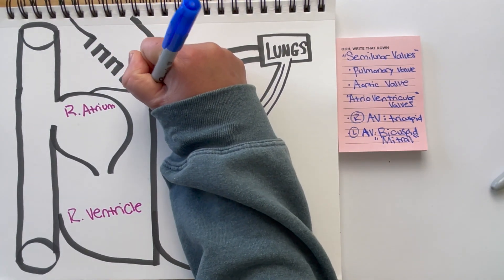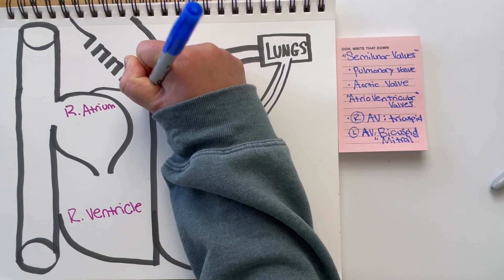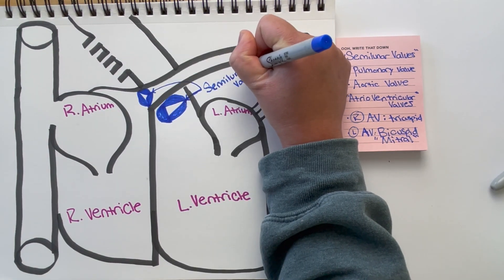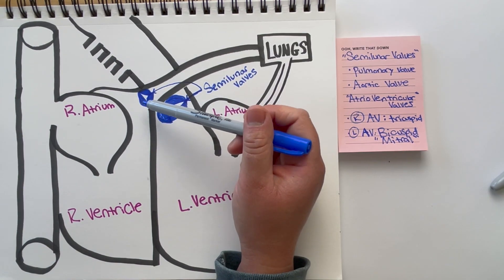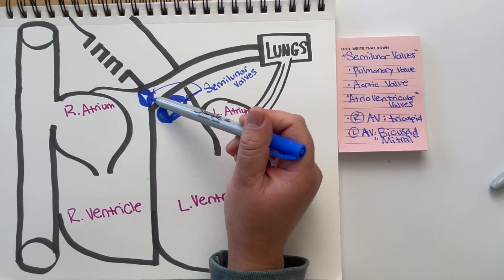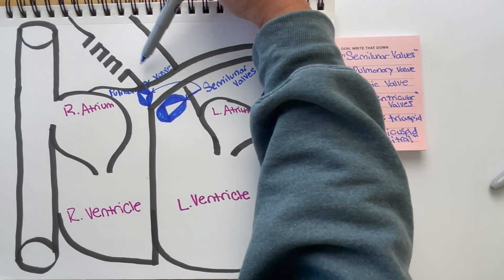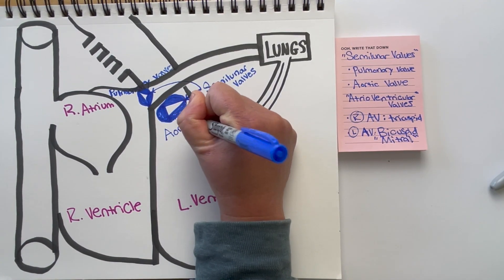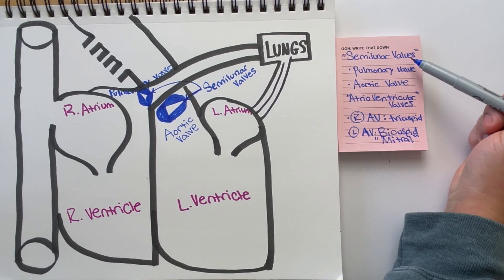Next we have our valves. We have four important valves in the heart. Two of them are called your semi-lunar valves, and the other two are called your atrio-ventricular valves. Your semi-lunar valves include your pulmonary valve and your aortic valve. Your pulmonary valve is what separates your right ventricle from your pulmonary trunk that leads to your lungs, and your aortic valve is what separates your left ventricle from your aorta. These valves are made of three cusps each and they resemble a half moon or semi-lunar shape, which is why they're called semi-lunar valves.